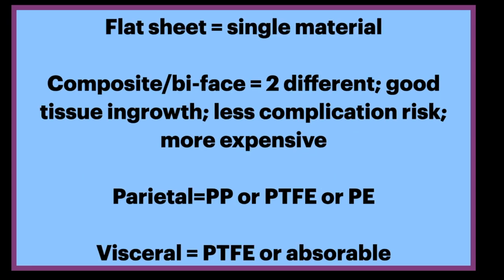These components are used alone or in combination. A flat sheet mesh is made of a single material. In contrast, a composite or biface mesh is made of two different materials — one on the parietal side, such as PP, PTFE, or PE, and one on the visceral side, usually PTFE or an absorbable material. Biface meshes have good tissue ingrowth into the abdominal wall and a low risk of bowel complications, but they are more expensive.